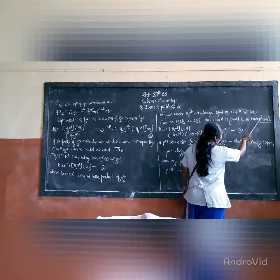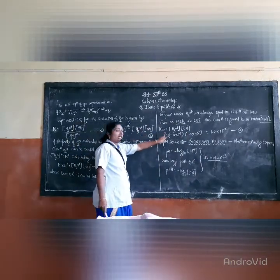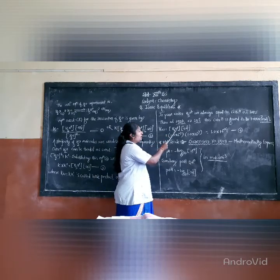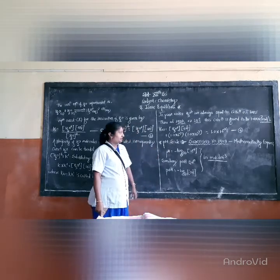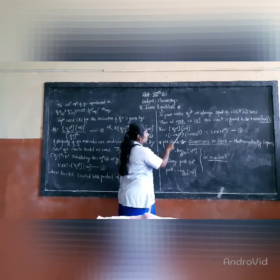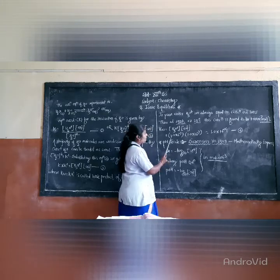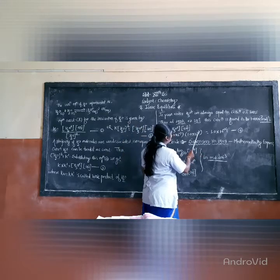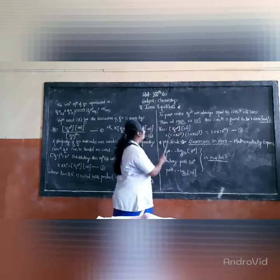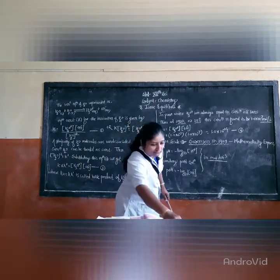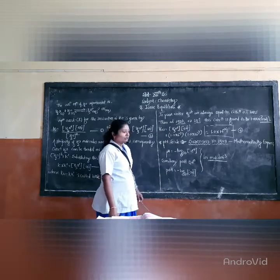KW is equal to the concentration of H3O⁺ into the concentration of OH⁻. Therefore, KW equals 1.0 × 10⁻⁷ multiplied by 1.0 × 10⁻⁷, which equals 1.0 × 10⁻¹⁴. This is the ionic product of water, equation number four.